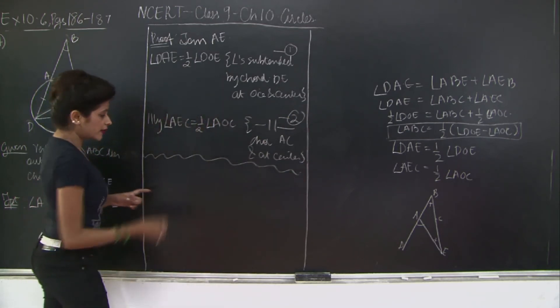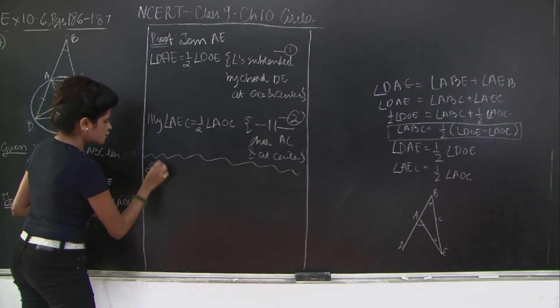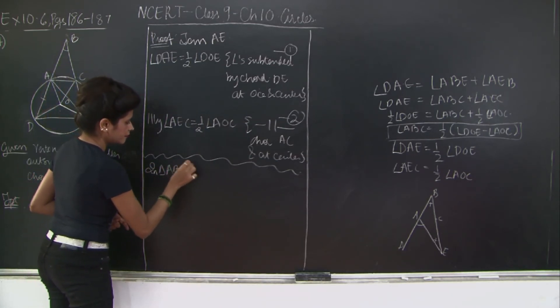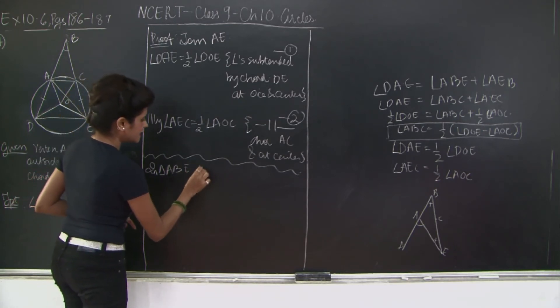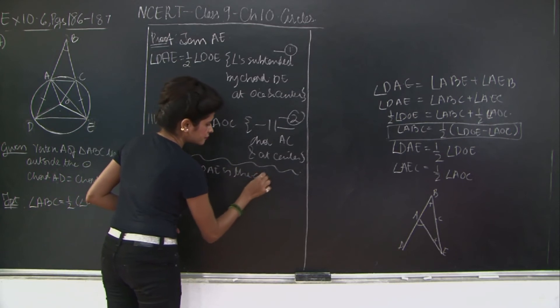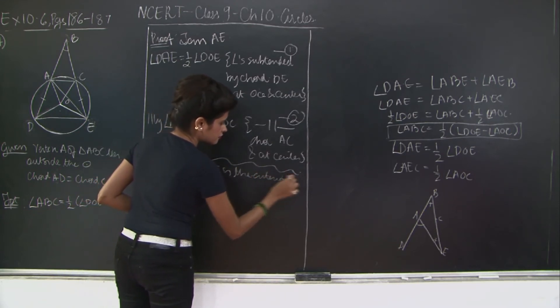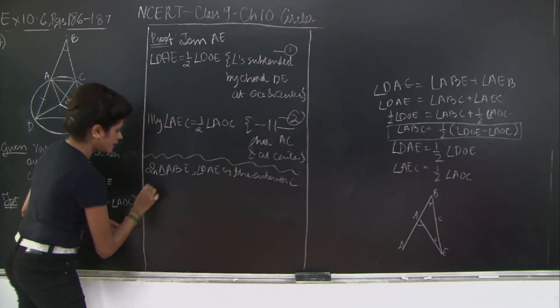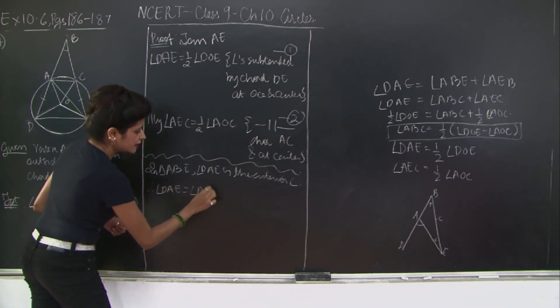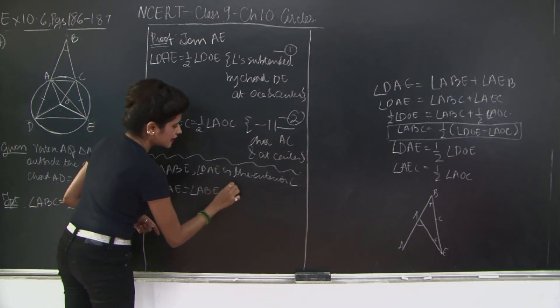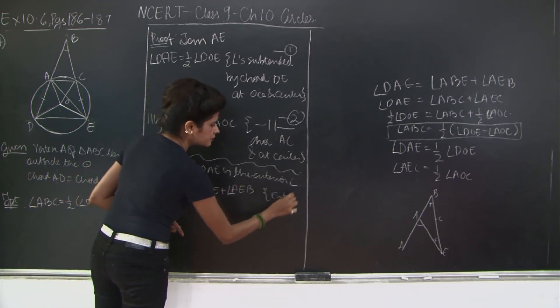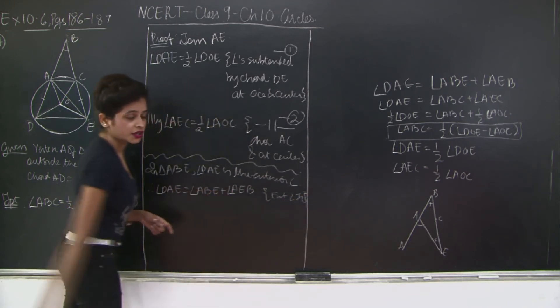Now I will say in triangle ABE, angle DAE is the exterior angle. Therefore I have angle DAE is equal to angle ABE plus angle AEB through exterior angle property.